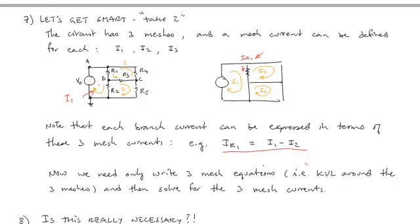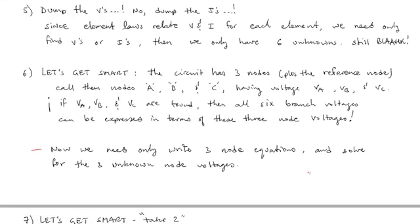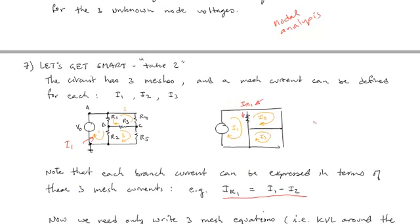This is completely analogous or dual to being able to write the branch voltages using the node voltages in the circuit. So now we need only write three mesh equations. In other words, KVL around three meshes. And then solve for the three mesh currents. So we have two different methods. And the second method will be what we call the mesh analysis. And the first method here, number six, will be called nodal analysis. So this will be nodal analysis because we're going to be solving for the node voltages. And the second one is going to be mesh analysis.